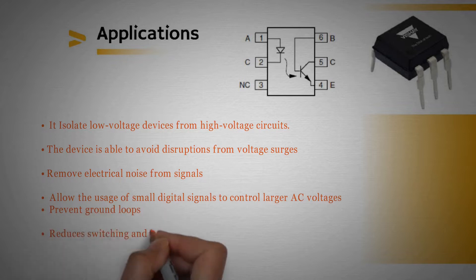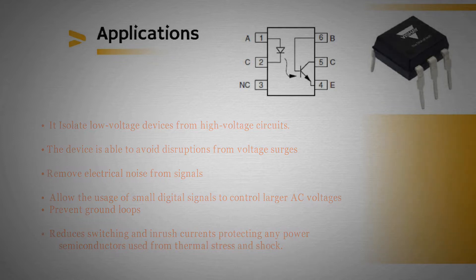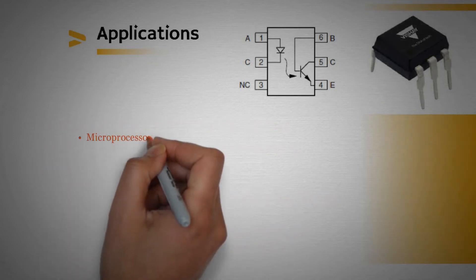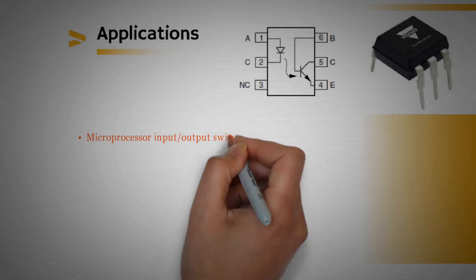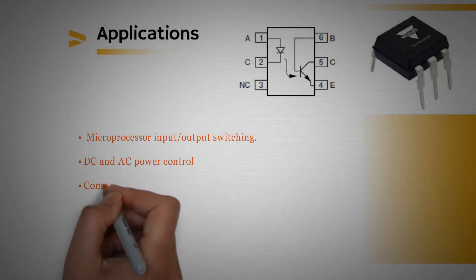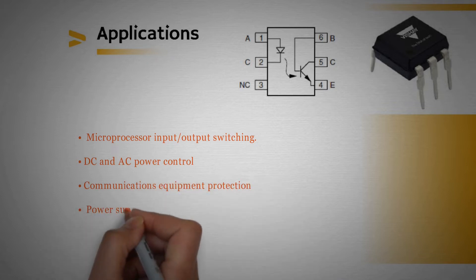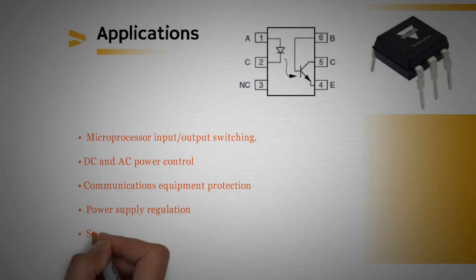Reduces switching and inrush currents protecting any power semiconductors used from thermal stress and shock. You'll typically find these devices being used for microprocessor input/output switching, DC and AC power control, communications and protection circuits, power supply regulation, solid-state relays and zero cross-detection circuits.